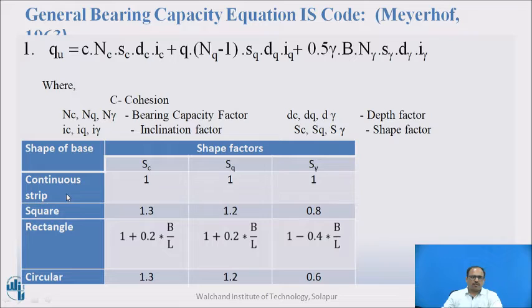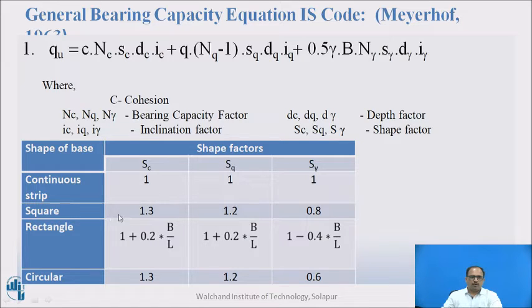For a continuous strip footing, Sc, Sq, and Sγ are all equal to 1. In case of a square footing, Sc is 1.3, Sq is 1.2, and Sγ is 0.8.